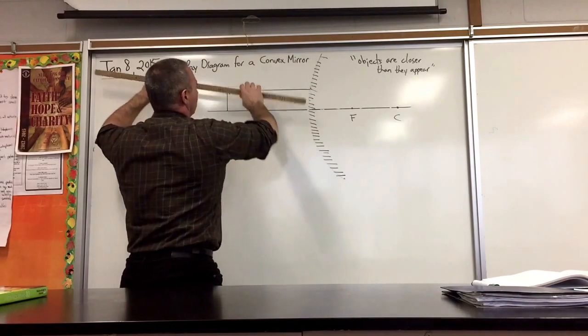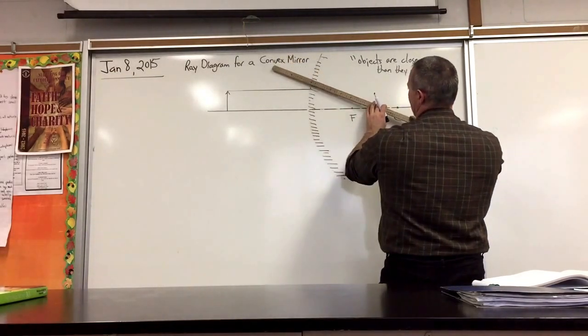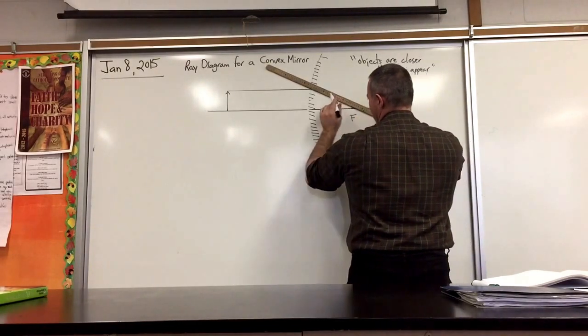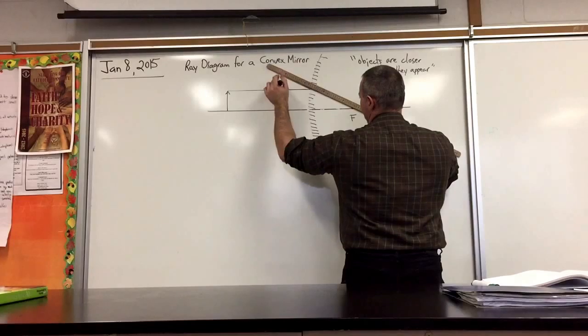When the ray reflects, what you do to point it is start from the focus. You make it look as though it's coming from the focus. Aim it outwards.